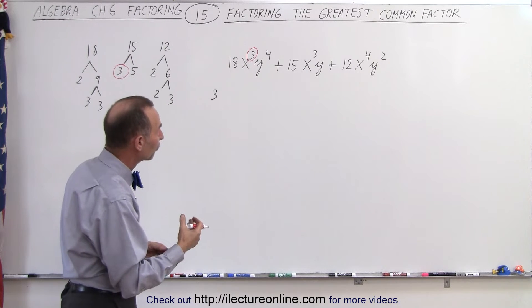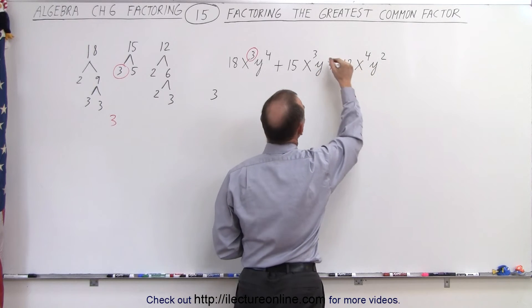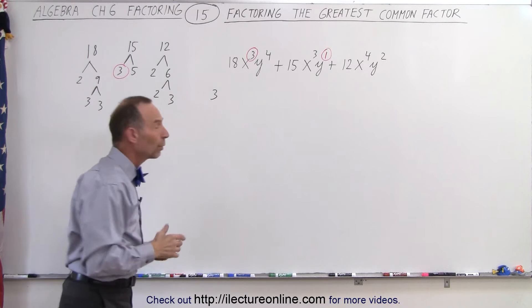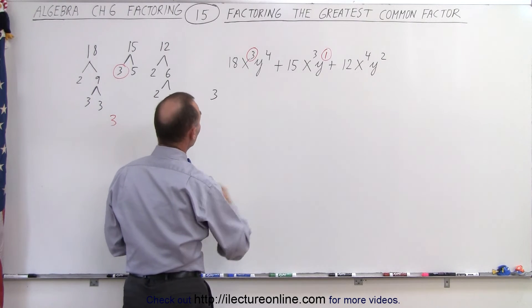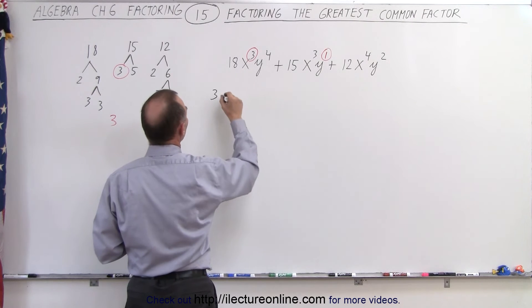The smallest exponent for y, we have a y to the fourth, y to the first, and y squared. So the smallest exponent is y to the first power, so we can pull out a y to the first, which means that the greatest common factor would be 3, x cubed, y to the first power.